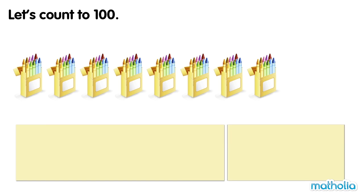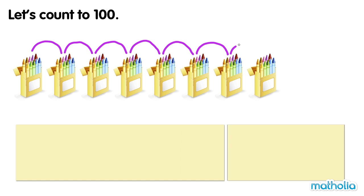There are 8 boxes of crayons. How many crayons are there? 10, 20, 30, 40, 50, 60, 70, 80. There are 80 crayons. 8 tens equals 80.